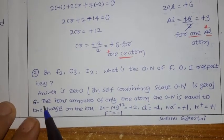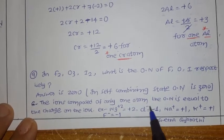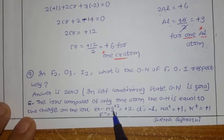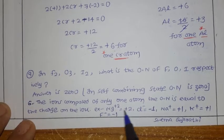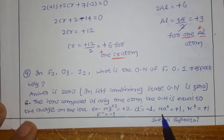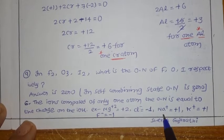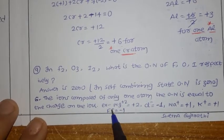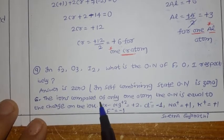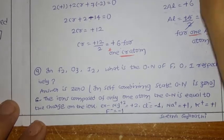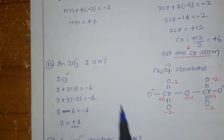The sixth rule: ions composed of only 1 atom — the oxidation number is equal to the charge on the ion. For example, Mg2+ has oxidation number plus 2. Cl- has oxidation number minus 1. Na+ has oxidation number plus 1. K+ has oxidation number plus 1. F- has oxidation number minus 1. So for single-atom ions, the oxidation number equals the charge on the ion. There are further examples in the notes for you to work out.